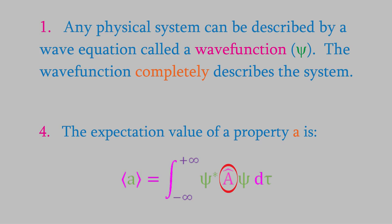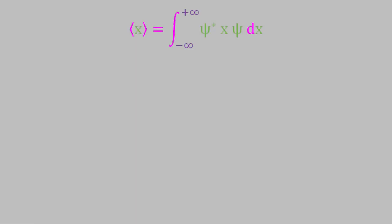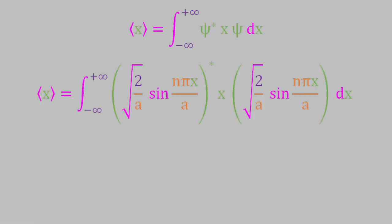From postulate 2, we know that the operator for position in the x-dimension is just multiplication by x. So we'll plug that in for our operator, and the wave function psi we know for the particle-in-a-box. Now we have an equation for the most likely position of our system.